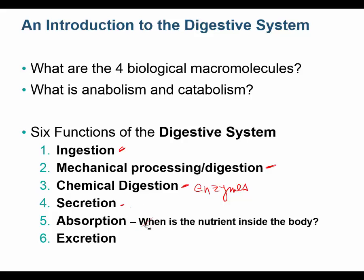Absorption is possibly a new concept. If you swallowed a marble, that marble went all the way through you and came out in your feces - that marble was never inside your body. Your digestive tract is a tube, and the lumen of that tube is not inside your body. Just like lining up donuts, what's in the tube formed by donuts is not inside the donut. A nutrient is inside your body only when it's absorbed across the intestinal wall into your blood or lymph. When absorption occurs, the nutrient is inside your body.